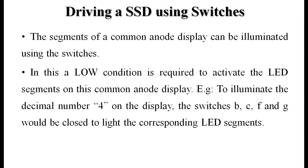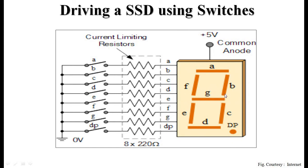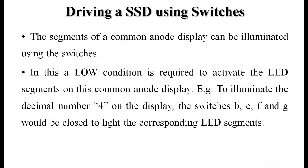To display a digit on a common anode display, a low condition is required to activate the LED segments. For example, to display the number 4, switches b, c, f, and g must be closed to light the corresponding LED segments — so those four switches complete the circuit and the digit 4 is displayed on the SSD.